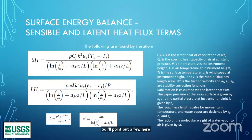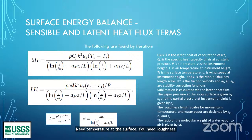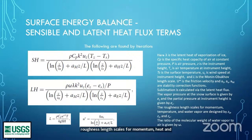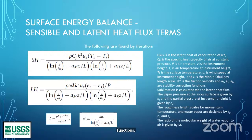You need U_z — that's wind at some known height Z. You need temperature at Z. You need temperature at Z_0, Z_T, and Z_E — those are the roughness length scales for momentum, heat, and vapor. A_H, A_M, A_E are stability correction functions. L is the Monin-Obukhov length scale; U-star is friction velocity.